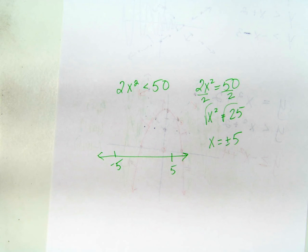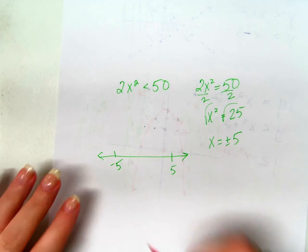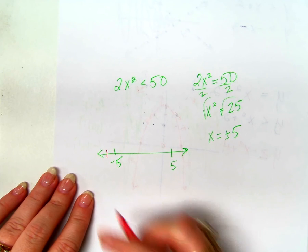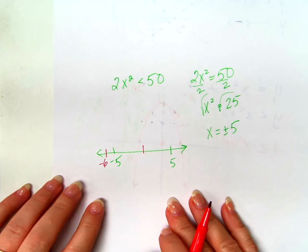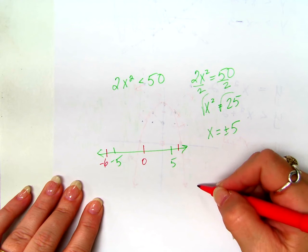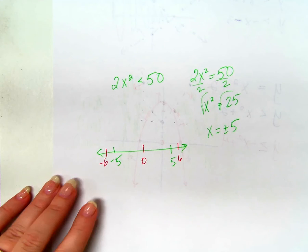So what should we try? If we're being safe, we're going to try three possible points. One of them would be over here. Like what? Negative 6. One of them would be in between. Like what? Zero. And one of them would be over here. Like what? Six.